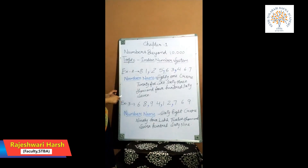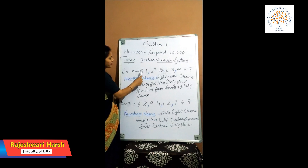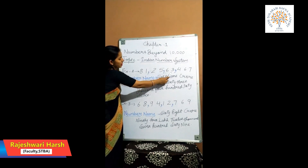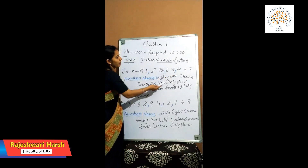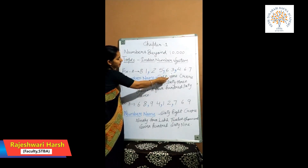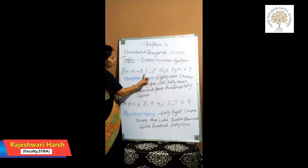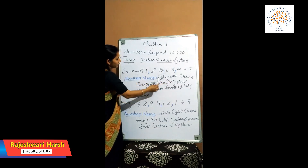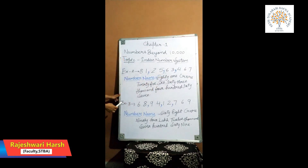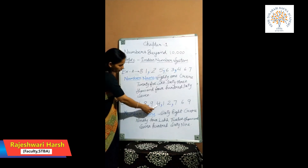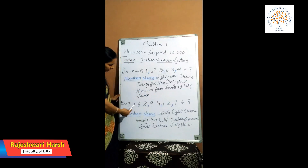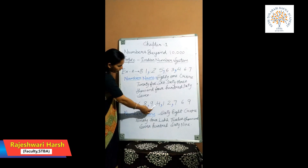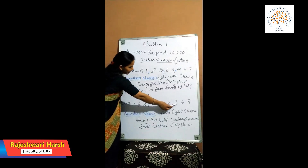Now let's take two more examples of the Indian Number System. First: 812563467. Put a comma before three digits from the right side and then commas before every two digits. The number name is 81 crore 25,63,467. Another example is 689412769. The number name is 68 crore 94,12,769.